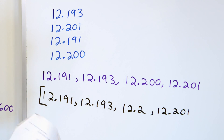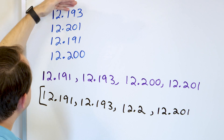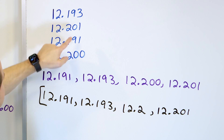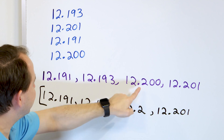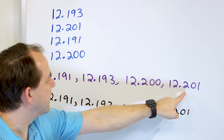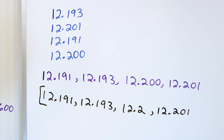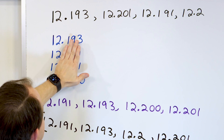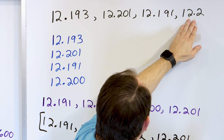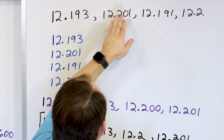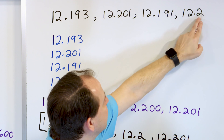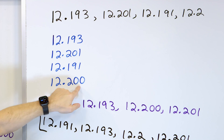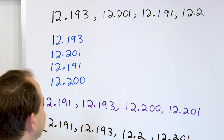Another way of looking at it, once you get all the decimals padded: since the whole numbers are the same, you can just look at the decimal parts. 191 comes first, 193 comes next, 200 comes next, and 201 comes last. Either way works. Notice that if you didn't pad the zeros, it would look like 12.2 is probably the smallest one, but it's really 0.200 — so it turns out not to be the smallest one.